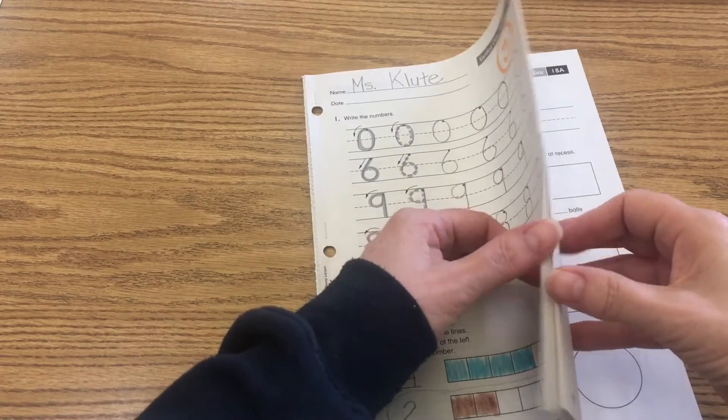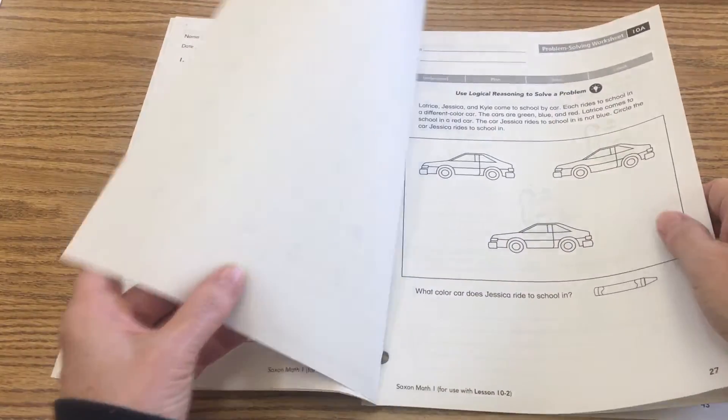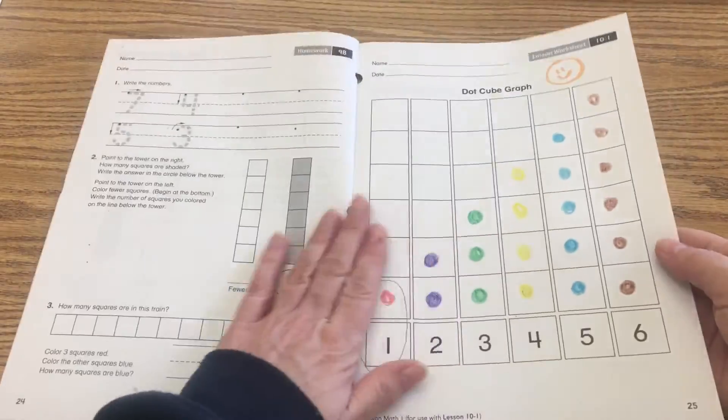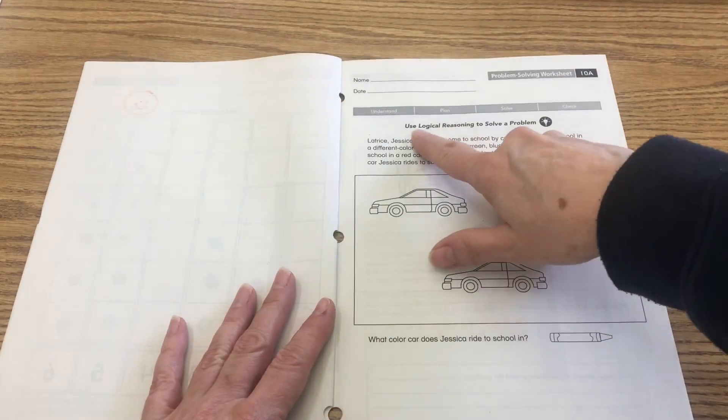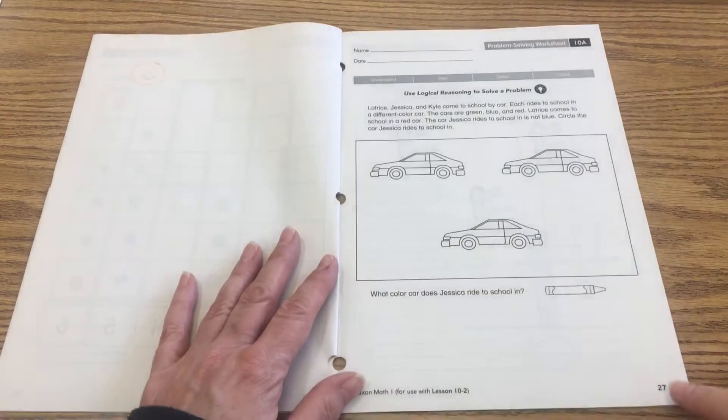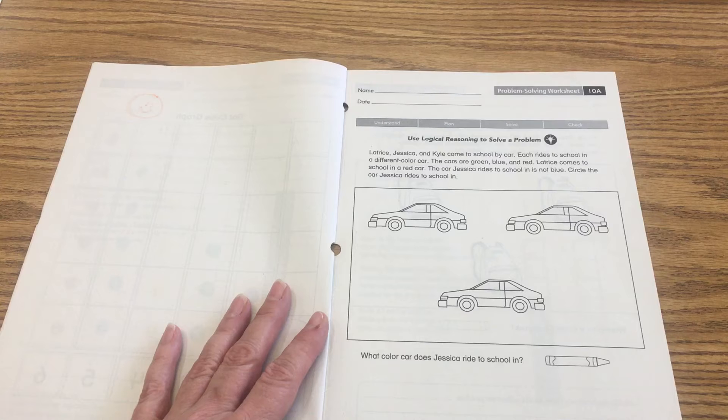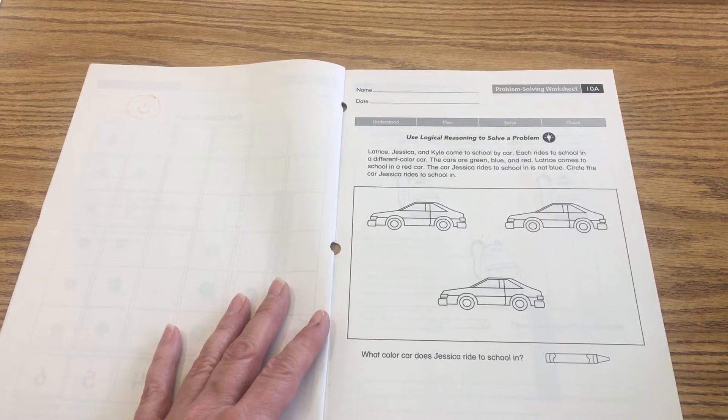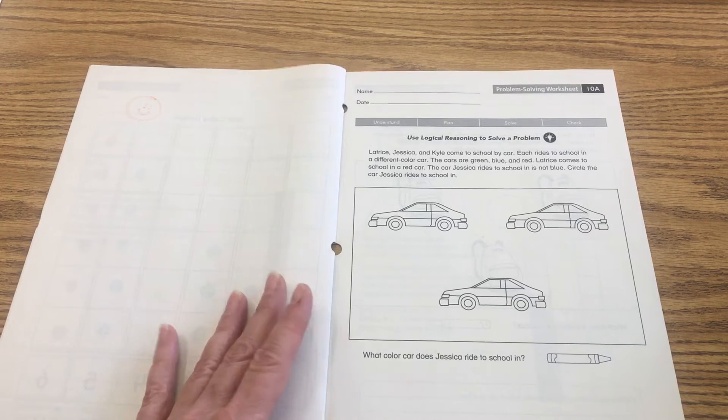By logic, it is worksheet 10A. It's right after the one we did with the dots yesterday. So this is the word logical reasoning, it's called a problem-solving worksheet 10A, and it's page 27. You will need your crayons and your pencil on this one, so we have to listen to the story to solve this problem.